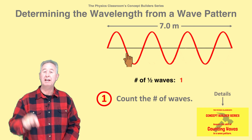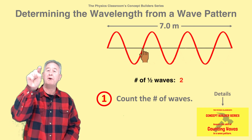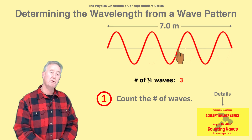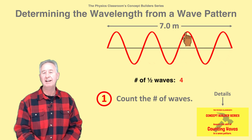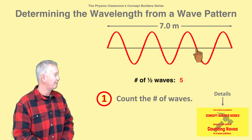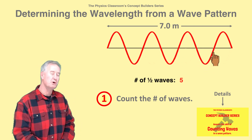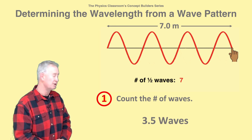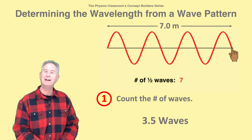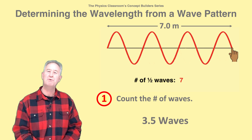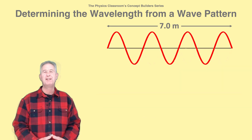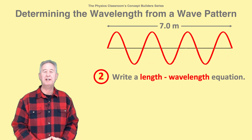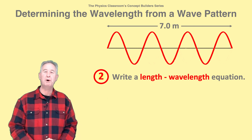Start at the beginning and trace over the wave pattern with your finger in order to count the number of waves. I like to count by half waves as shown in the animation. There are seven half waves in this rope — that's 3.5 waves.